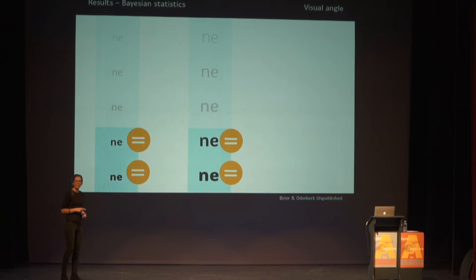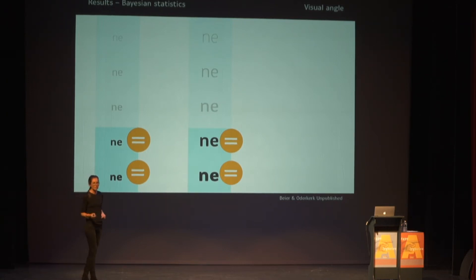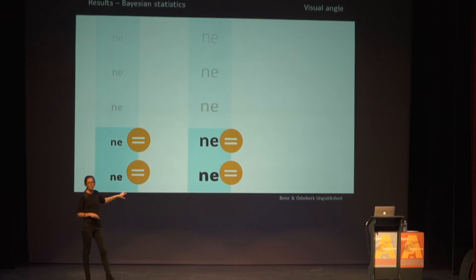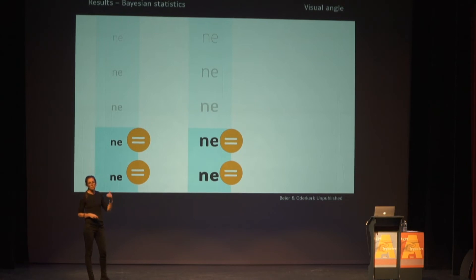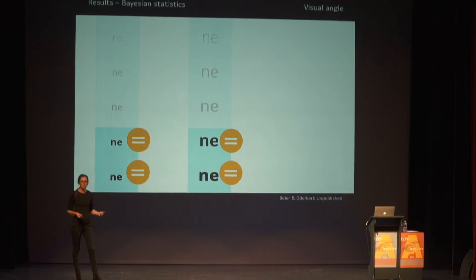When we looked at the relationship between bolder weights in the small and medium sizes, we found evidence for no difference at all between the bold weights. So as long as you have some degree of boldness in your letters for smaller visual angles, you should be fine.